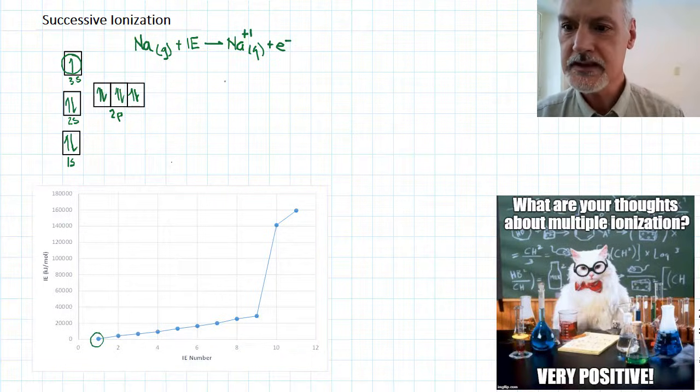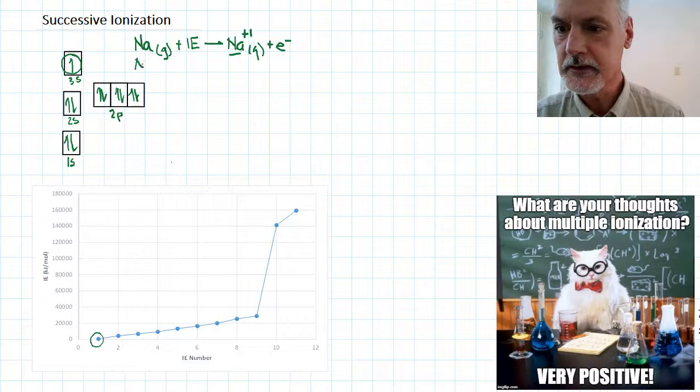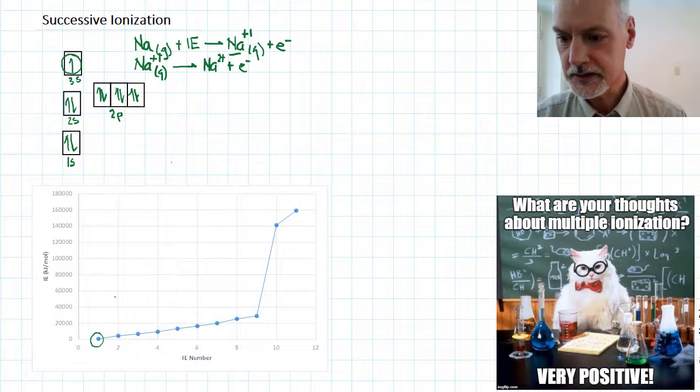If we now continue with this species, sodium plus one in the gaseous state, we add some energy to it. This time we'll produce sodium with a 2 plus charge and liberate a further electron. That value you'll see here.